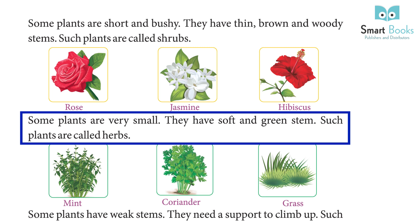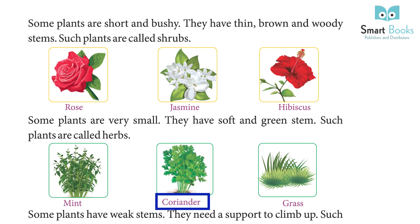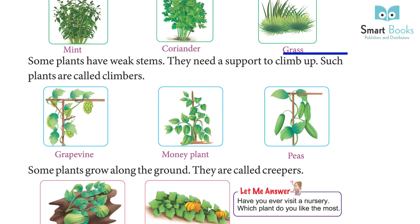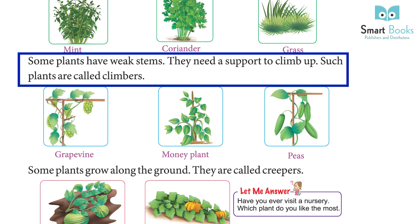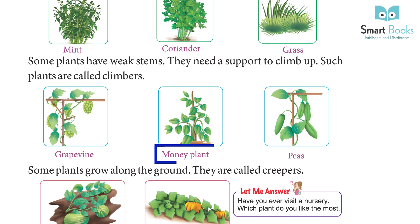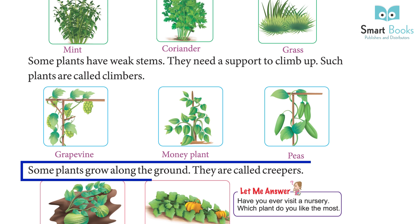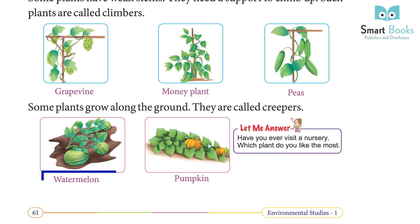Some plants are very small. They have soft and green stems. Such plants are called herbs — mint, coriander, grass. Some plants have weak stems and need support to climb up. Such plants are called climbers — grapevine, money plant, peas.